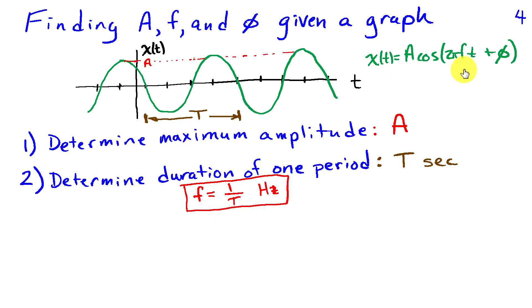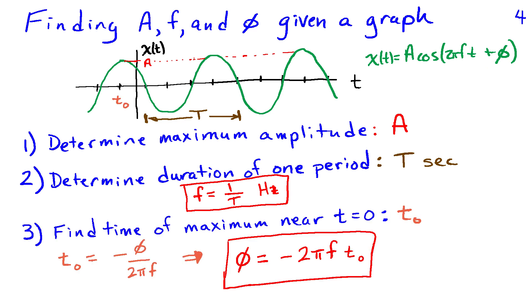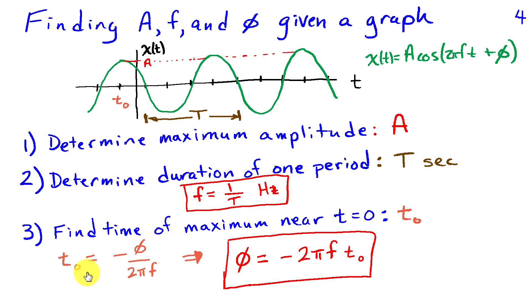Now we have A and F, and it remains to find the phase φ. One way is to find the time of the maximum nearest to t = 0; call it t₀. That maximum occurs when the argument of the cosine is zero, so t₀ = −φ/(2πF). Since we already found F, we can solve for the phase: φ = −2πF·t₀.